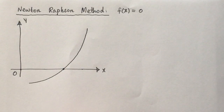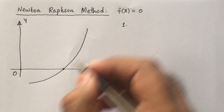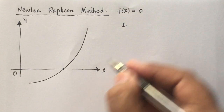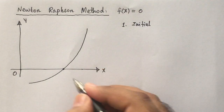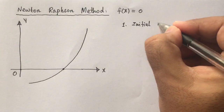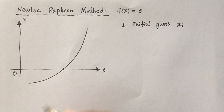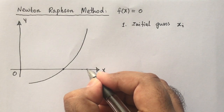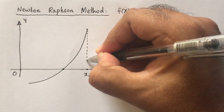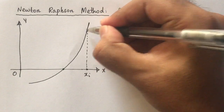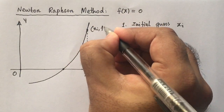The algorithm of the Newton-Raphson method involves a few steps. The first step is to take an initial guess — some value on the x-axis. Let's say that initial guess is xi. The corresponding point on the graph of the function has coordinates xi and f(xi).